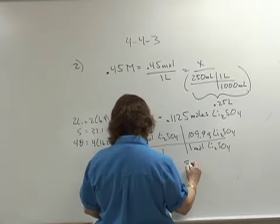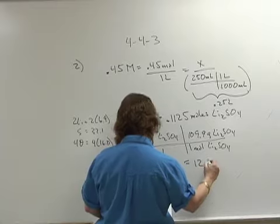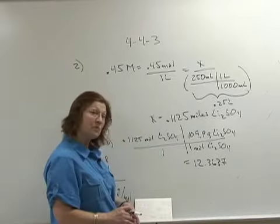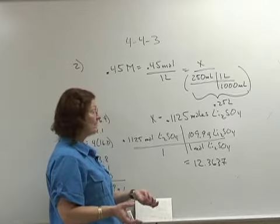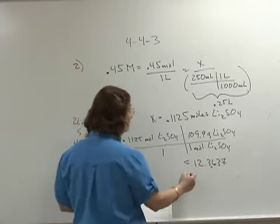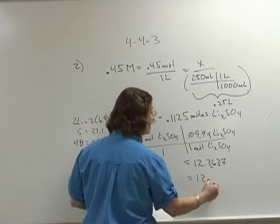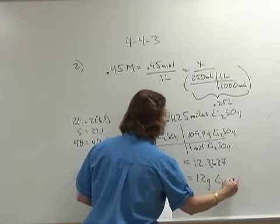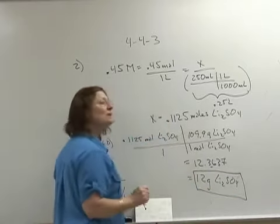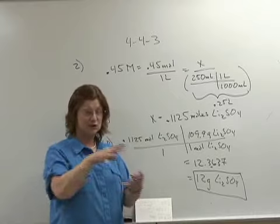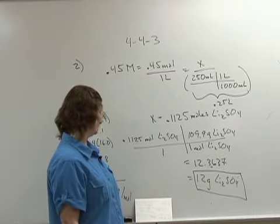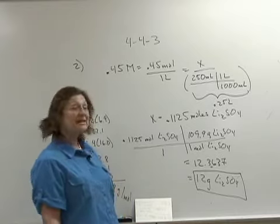When I do the math here I get 12.3637. Then I look back to my original problem and I know that I have to have two significant digits in my answer. The 3 does not round the 2 up. Therefore my answer is 12 grams of the lithium sulfate needs to be added to 250 milliliter volumetric flask to get a total volume in order to make the solution. That's how you do number 2.